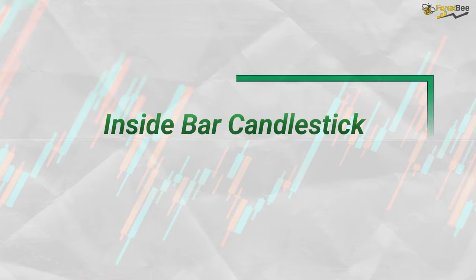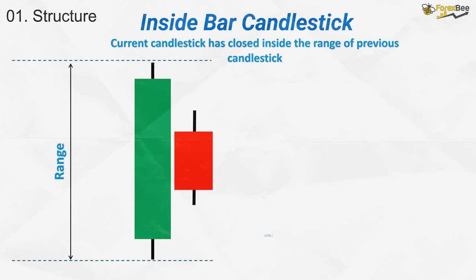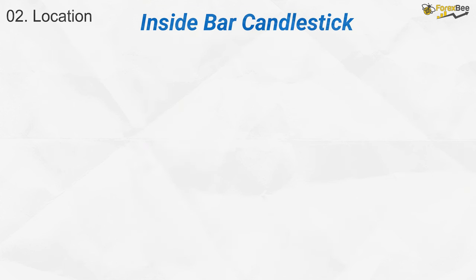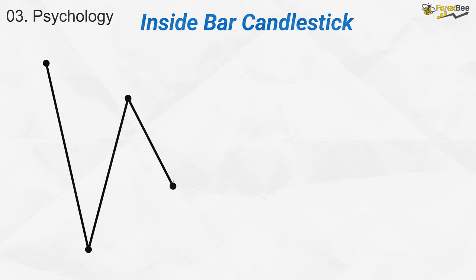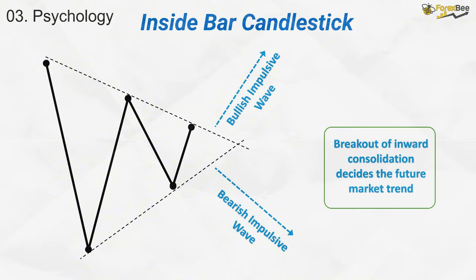Next, let's discuss the inside bar pattern. In an inside bar, the most recent candle closes within the range of the previous candle. The price movement of an inside bar forms an inward consolidation structure. An inside bar candlestick pattern typically forms at key levels such as support or resistance zones. The psychology behind the inside bar is that its breakout can provide valuable insight into market direction. If the breakout happens in a bearish direction, the market is expected to shift towards a bearish trend. Conversely, if the breakout occurs in a bullish direction, the market is likely to move in a bullish trend.